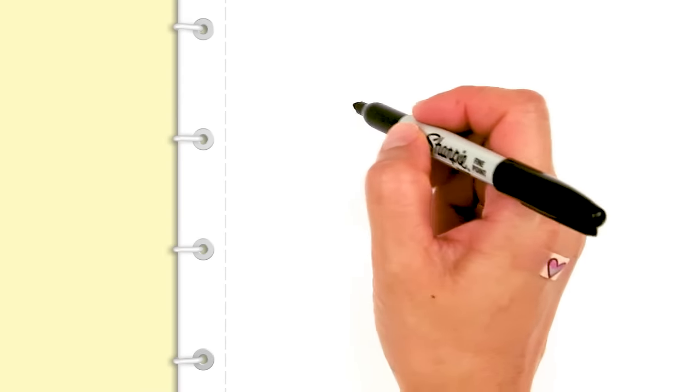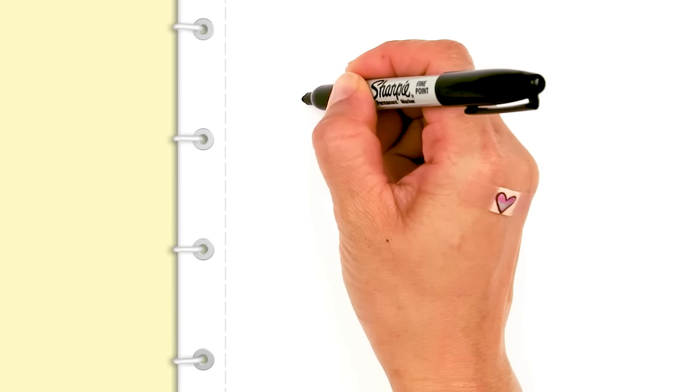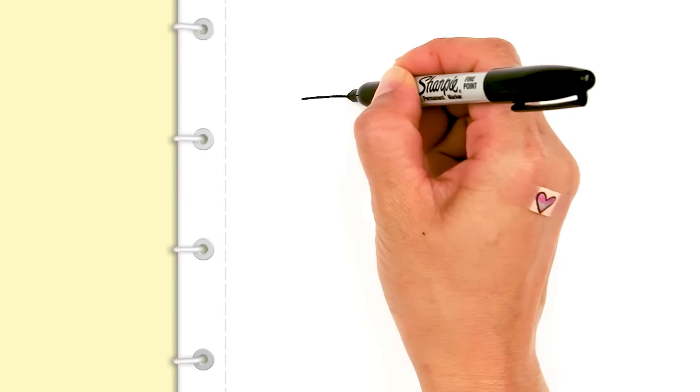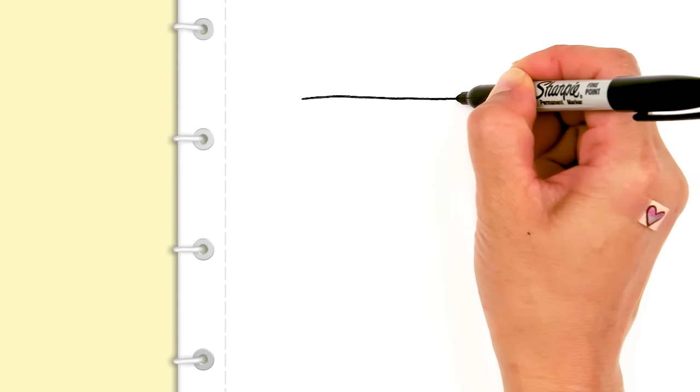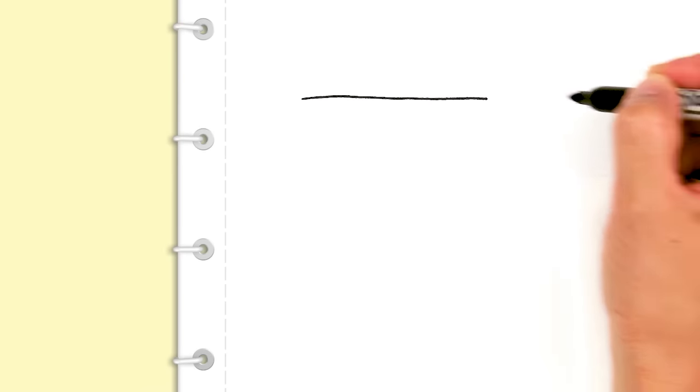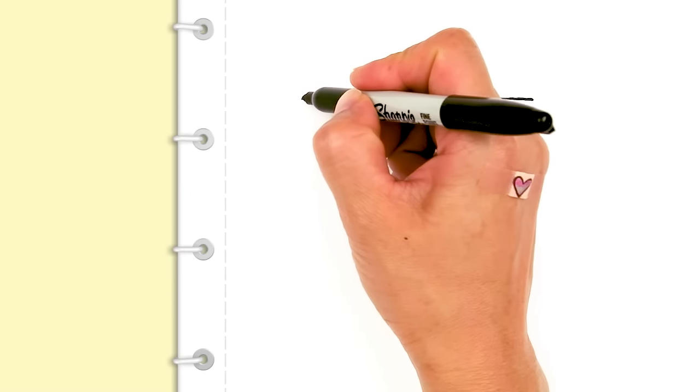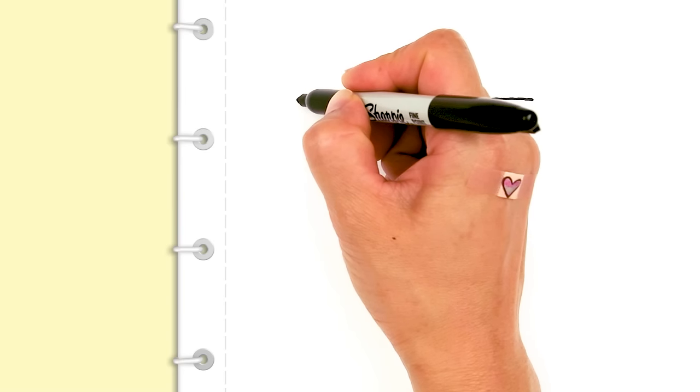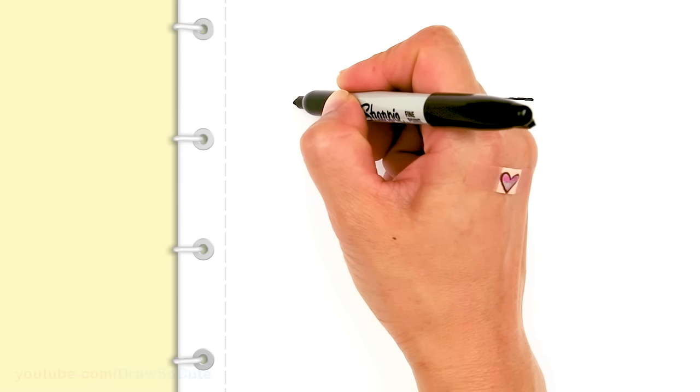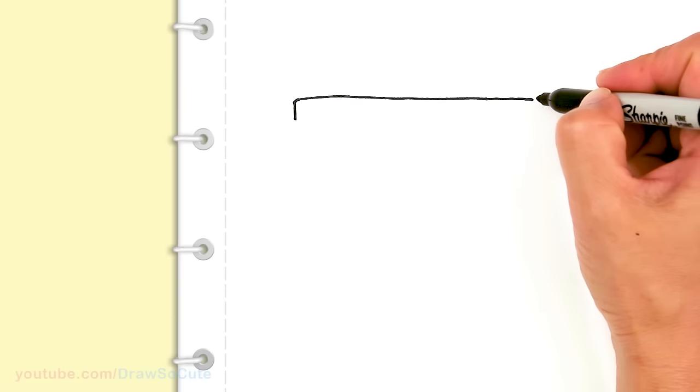To draw this s'more, we're going to first start by drawing the top cracker. I'm just going to draw a straight line for my cracker right across. Let's keep going about that long. And then I'm going to start to round off my corners just a little bit and then bring it down with a straight line.